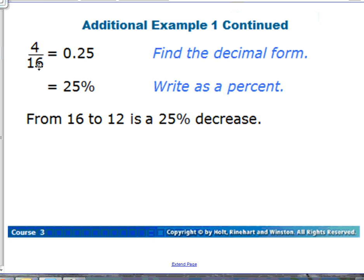And then we can use that 4 over 16 by finding the decimal form. Once we find the decimal form, it's very simple to find our percent by just sliding that decimal over twice. So our percent change from 16 to 12 is actually a 25 percent decrease. That word right there is very important. We want to make sure people understand that you are decreasing.